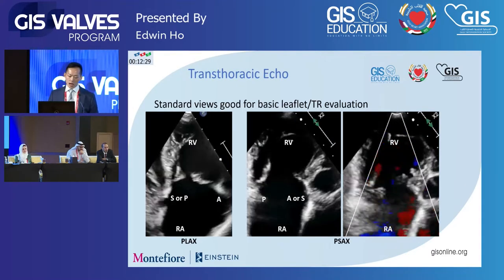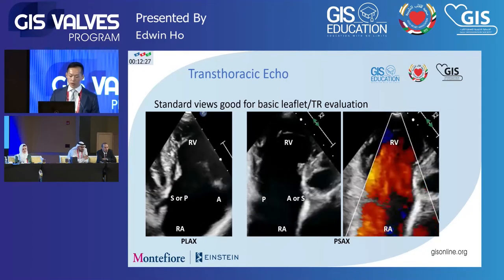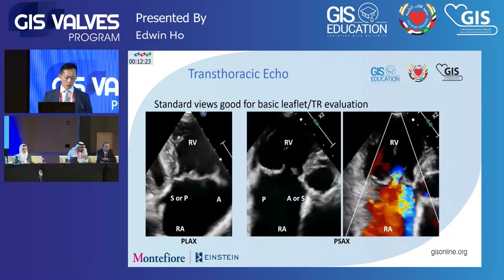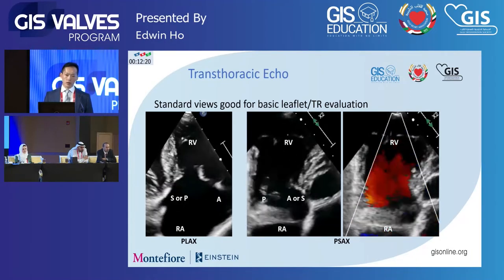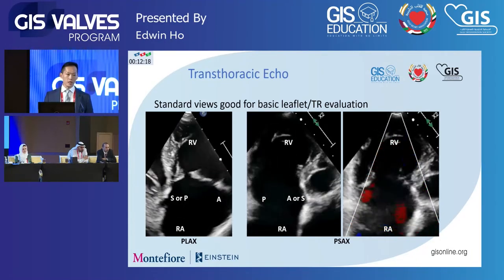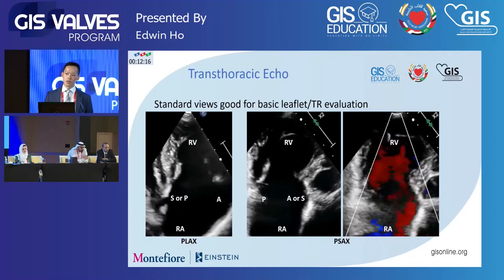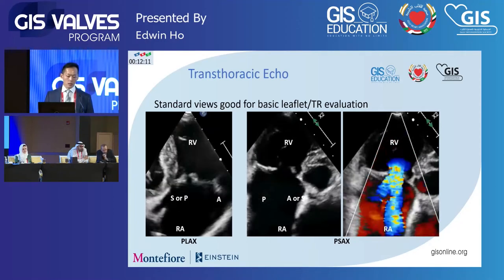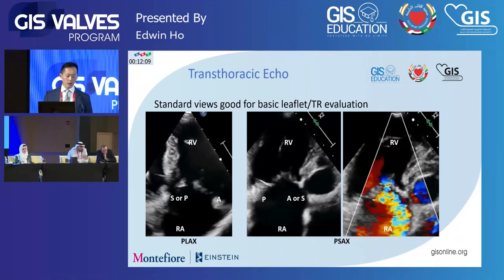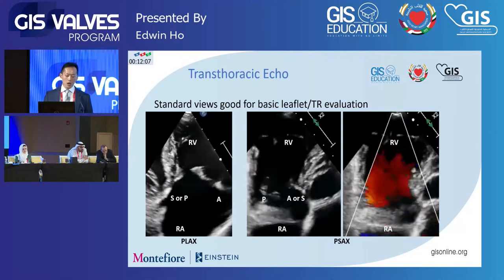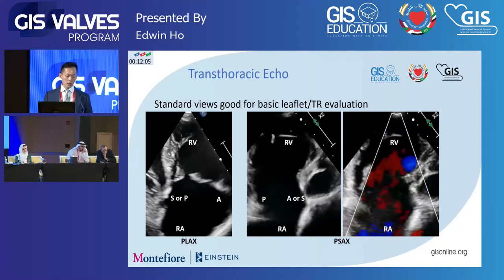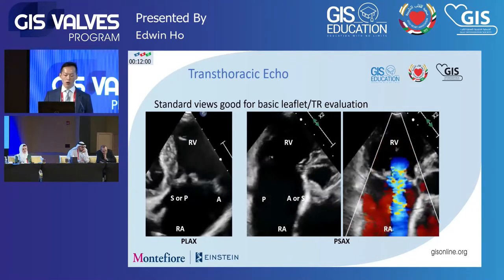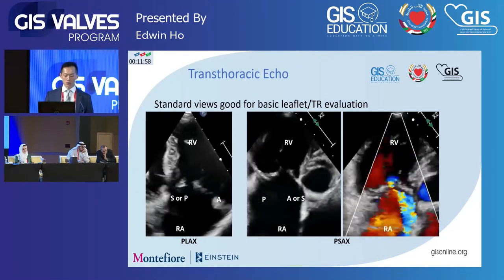When thinking about how we look at this anatomy, we always want to think about transthoracic echo first — that's usually what our patients get. Standard views are very good at looking at the leaflets in a basic form, so we can understand severe tethering, huge gaps, and lots of TR happening. The downside is that precision in evaluating all the leaflets can be limited. In 2D imaging, it's often very hard to tell exactly what leaflet you're looking at.